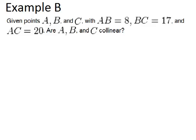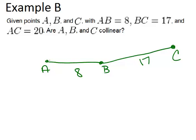So I'm definitely going to draw a picture to get started with this. I know that AB equals 8, and BC equals 17. And I don't know yet if that's supposed to be a straight line. And AC equals 20.